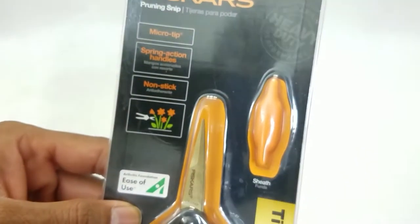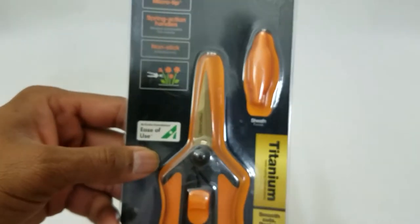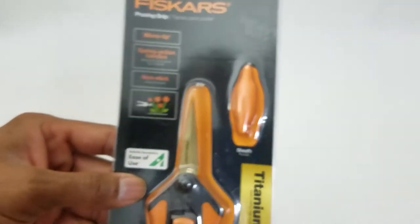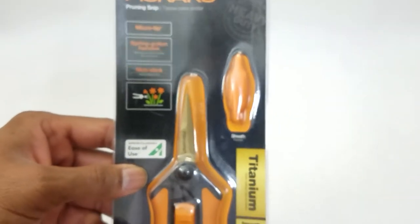It has spring action so it's good for people that have arthritis. This is non-stick, so if you're cutting aloe vera or any flowers that release a lot of sap, that's not going to cause any issues. It comes with its own sheath.